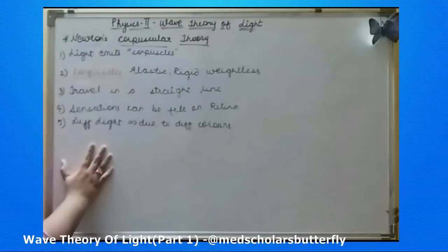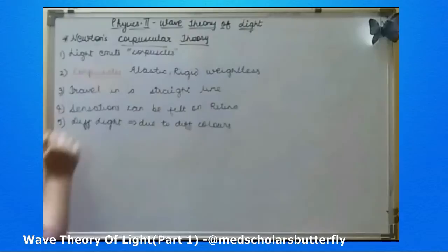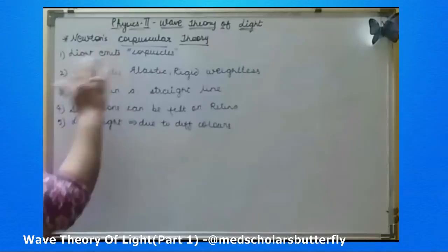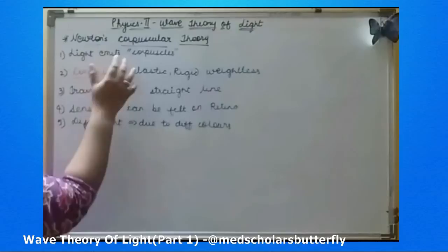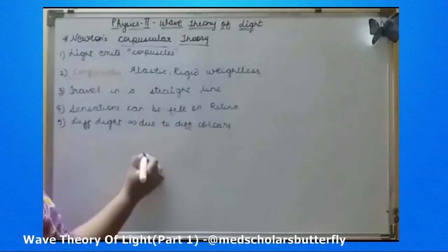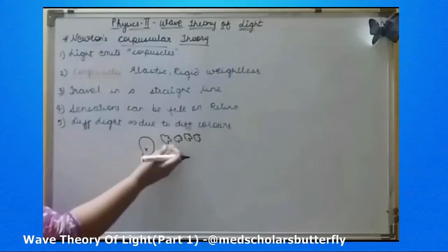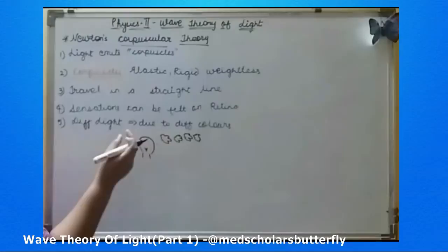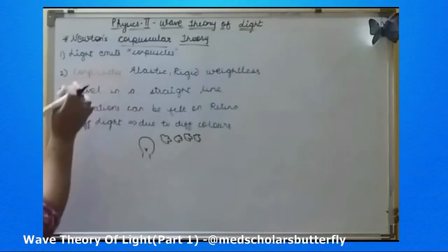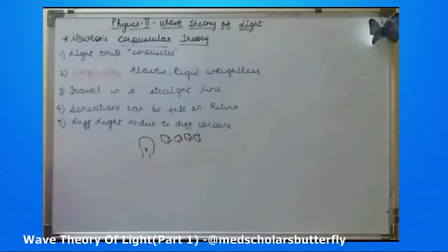In today's lecture we are going to learn about wave theory of light. First is Newton's corpuscular theory. He said that light emits some corpuscles when there is emission of light from a light source. He didn't know the exact name of what the corpuscles were called. These corpuscles had the property that they are elastic, rigid, as well as weightless — they don't have any weight.